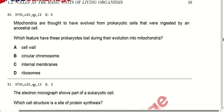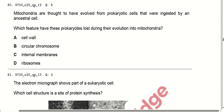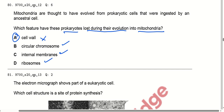Mitochondria are thought to have evolved from prokaryotic cells that were ingested by an ancestral cell. Which features did these prokaryotes lose during evolution into mitochondria? Cell walls — mitochondria do not have cell walls. It retains circular chromosomes, inner membranes, and ribosomes. So the feature lost is the cell wall. Option A is correct.